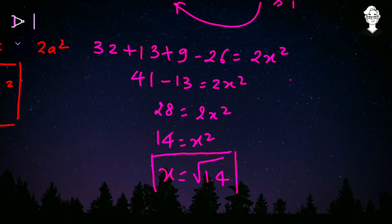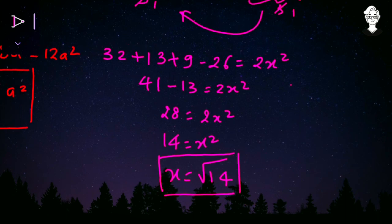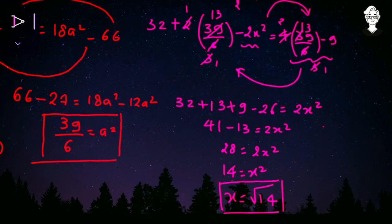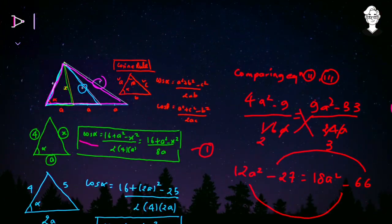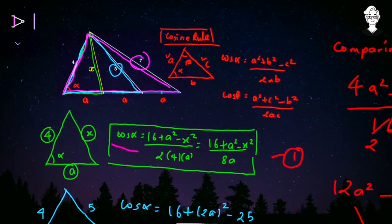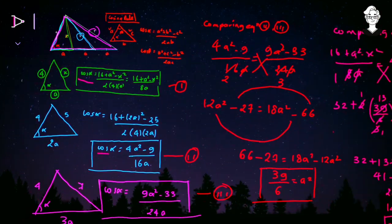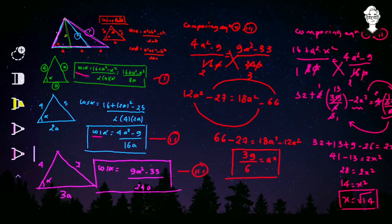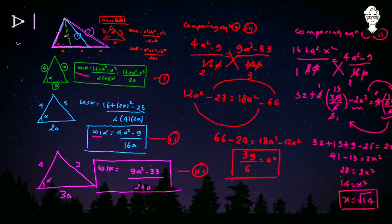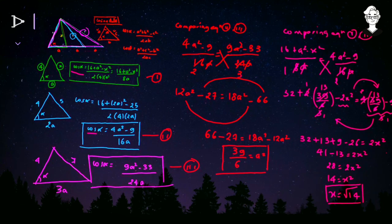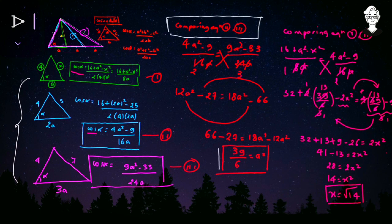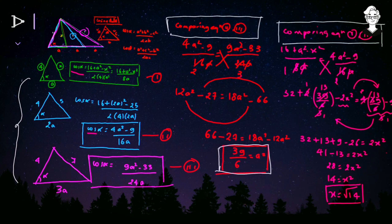We take only the positive root because x is a side length and side lengths are always positive. So x = √14 is our answer. To summarize: we applied the cosine rule three times to get three equations for cos alpha, compared equations 2 and 3 to find a², then compared equations 1 and 2 to find x = √14.